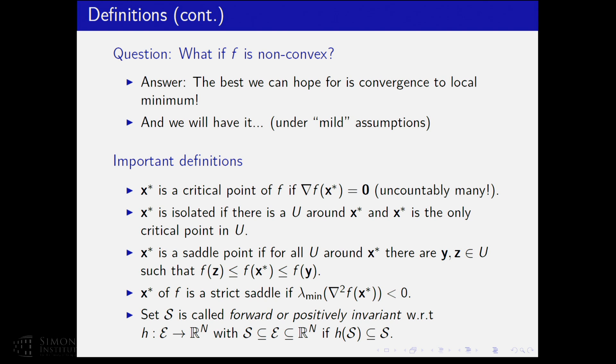And this is just my statement, but I believe you believe that too. The best you can hope for is convergence to some local minimum. And this is what we are going to show in this talk. So, I'm giving you some definitions here. What is a critical point? It's a point that turns the gradient of f to be zero. An isolated critical point is a point so that there exists a neighborhood in that point, and this is the unique critical point in that neighborhood. A saddle point is a critical point which is not a local optimum. A strict saddle has the assumption that the Hessian of f has minimum eigenvalue which is less than zero. And then we have the definition of forward or positively invariant set with respect to some function h, which is just if you apply your function h to that set, then the image is a subset of the original set.